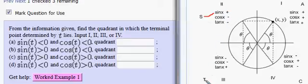The T in 'all students take calculus' stands for the tangent function. Notice the tangent function is positive in quadrant three, meaning the other two are negative. And then finally the C stands for the cosine function, which is the only function that is positive of those three in quadrant four. And if it's positive, it means the other two are negative.